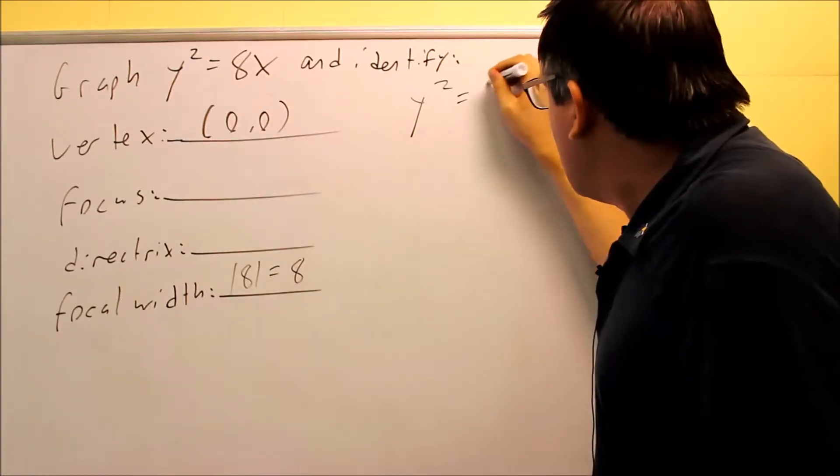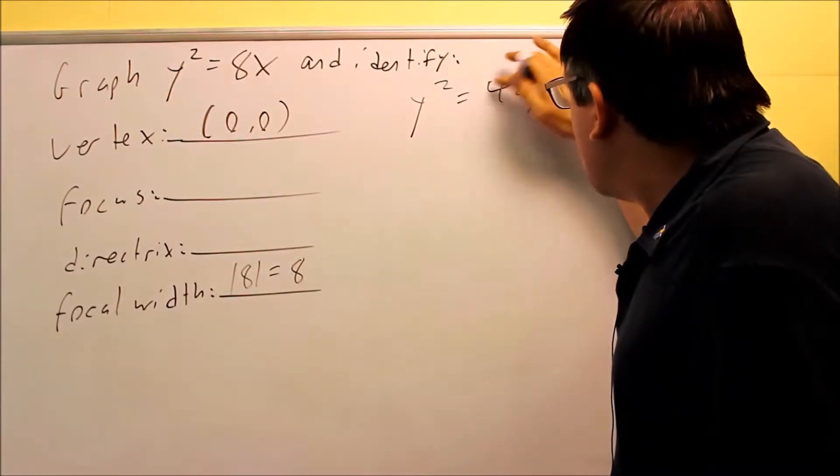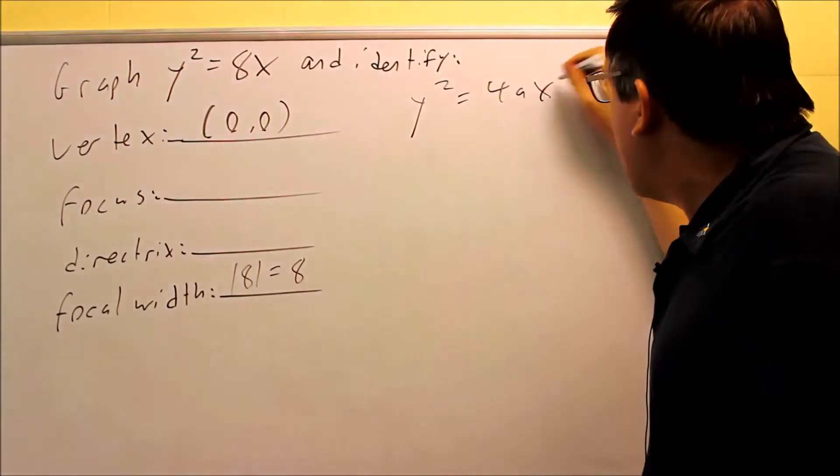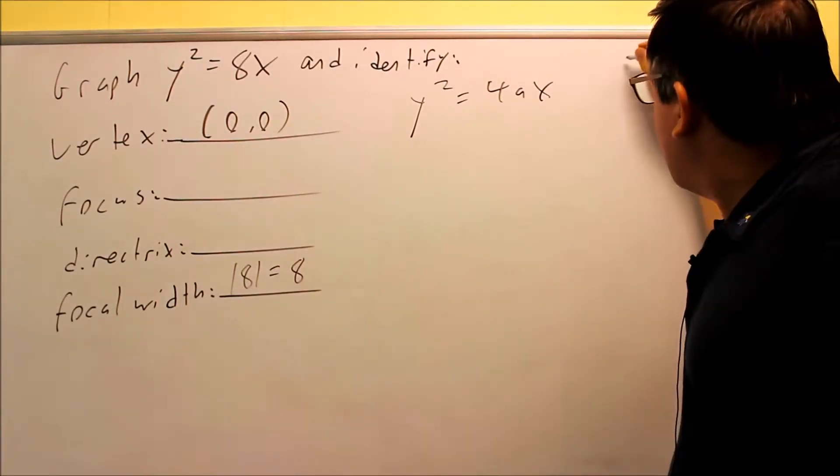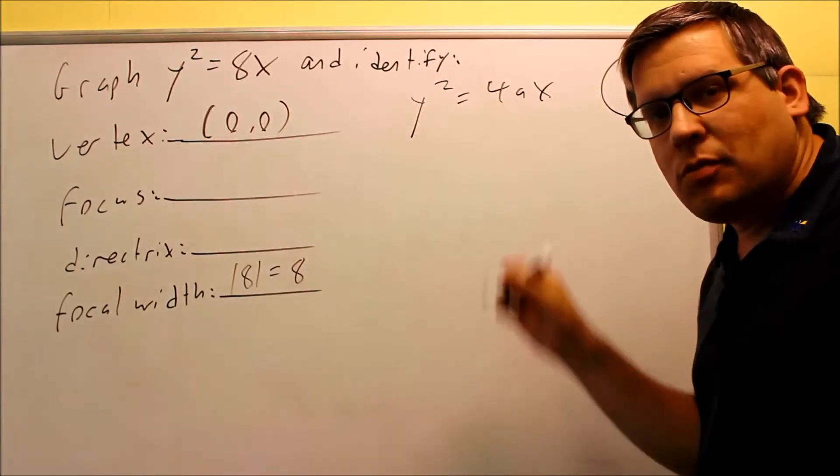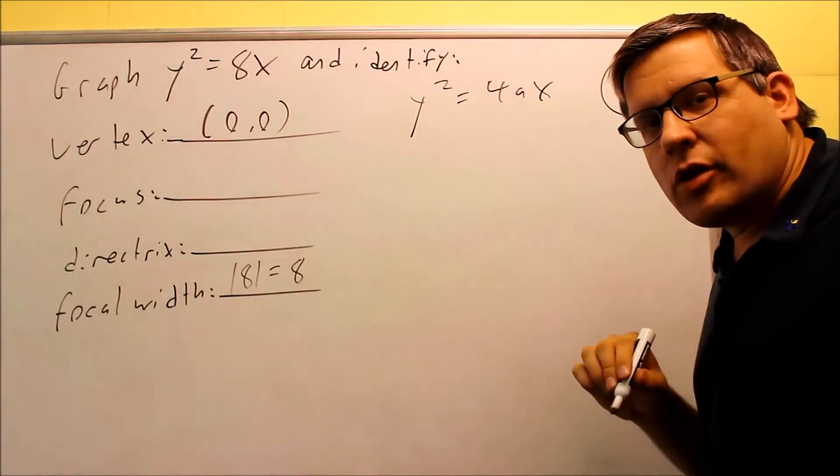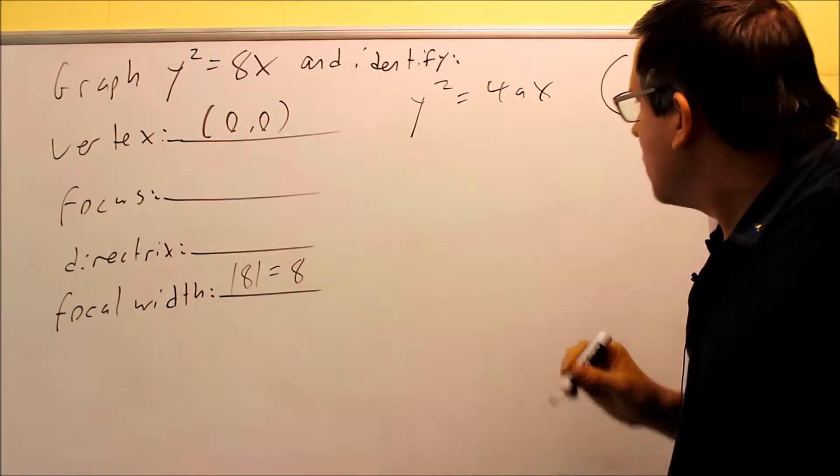And the one that it's going to match is the one that looks like this. It's going to be y squared equals 4ax. That particular one is a parabola that opens up to the right based on the model that we have, the picture that's in the notes.